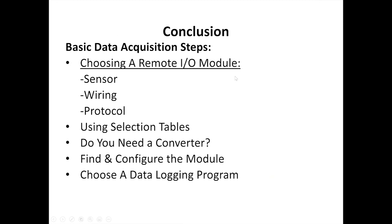That about wraps it up for today. Let me conclude and go over the steps we learned for setting up a basic data acquisition system. First, you have to choose a remote IO module based on the type of sensors, the type of data you want to collect, the wiring it communicates over, and the protocol it uses to communicate. We went over how to use the selection tables, which is very useful if you are one of our customers or sellers who needs to find a product quickly. Then you have to decide if you need a converter — we looked at the TM-7561. Finally, we talked about Decon Utility for finding and configuring the module on your network, and then discussed some data logging options. Hopefully that gives you a pretty thorough overview of what data acquisition is like, trying to demystify some of these terms.